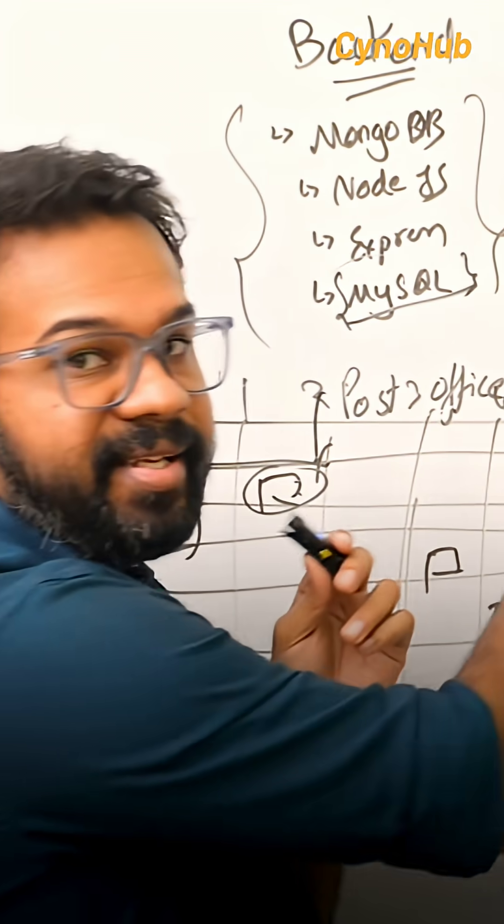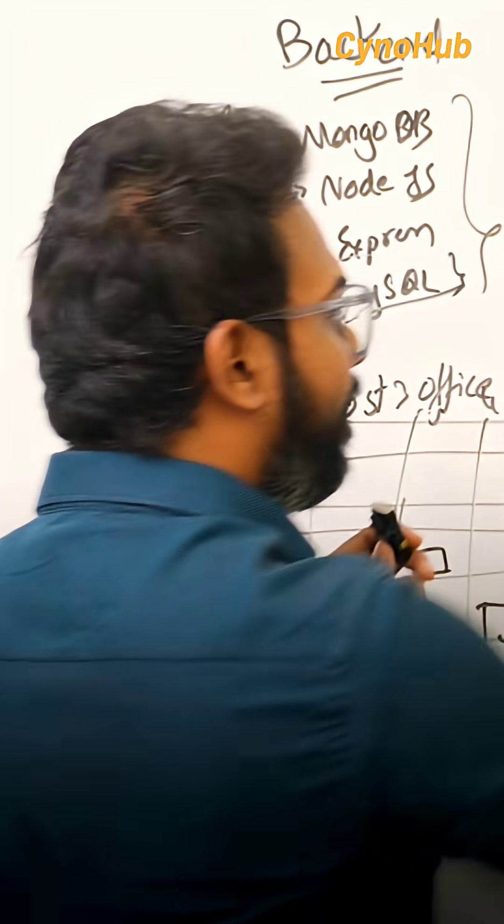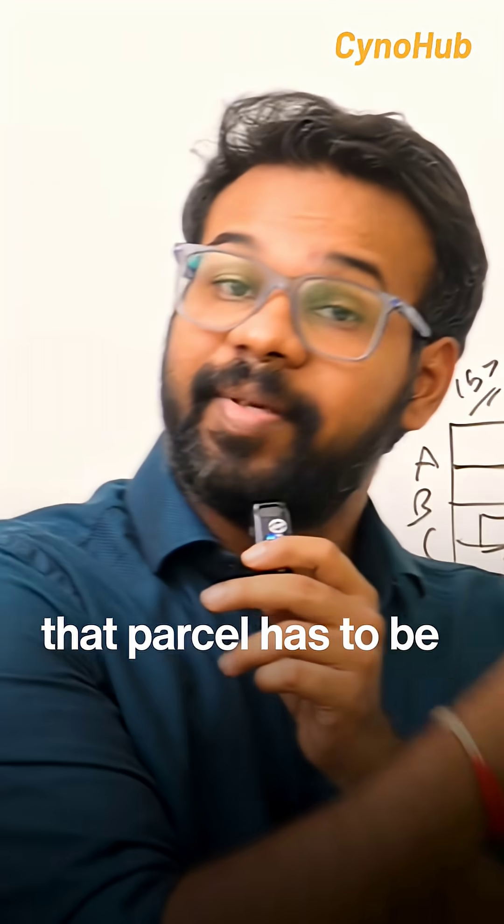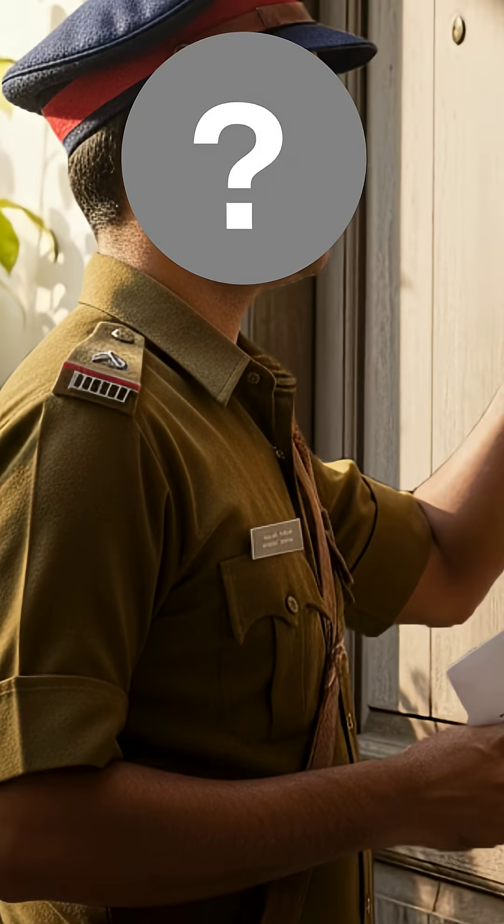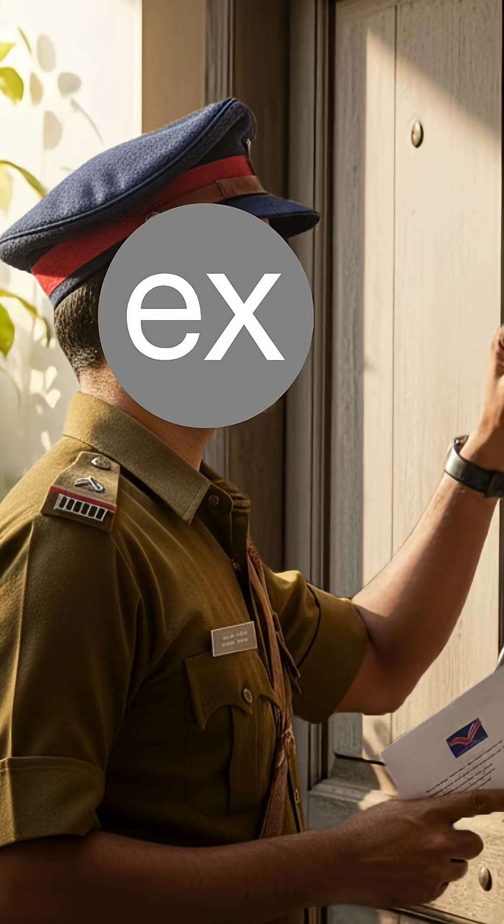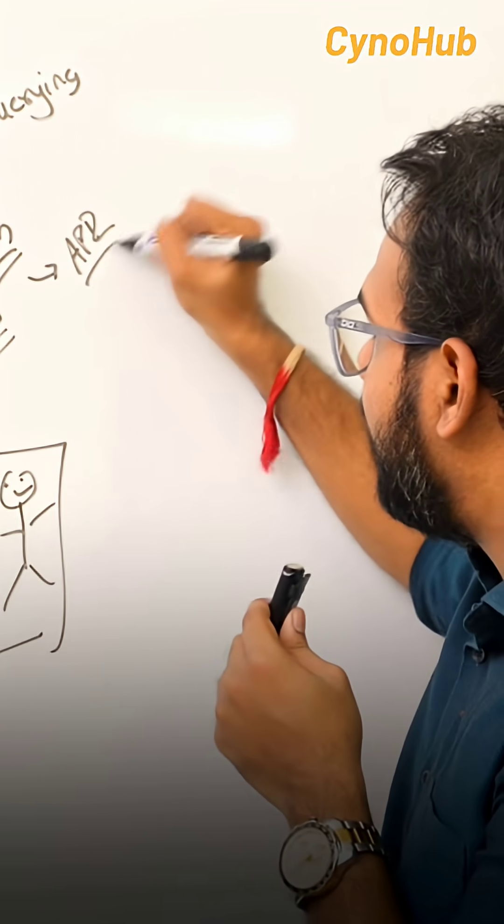There is MySQL, there is data query, there is a parcel of other people. Now, that parcel has to be delivered to the user. A delivery person, that is nothing but Express. It is used to build APIs. Think of APIs like delivery people.